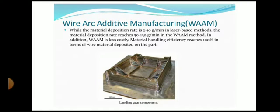While the material deposition rate is 2 to 10 gram per minute in laser-based methods — where you have the material in powder form and use a laser source for melting and depositing that material — with wire arc additive manufacturing, you can reach the deposition rate of 50 to 130 gram per minute. This is the biggest advantage of wire arc additive manufacturing. In addition, WAAM is less costly as you are using existing welding processes, and these welding equipments are very cheap compared to laser or electron beam sources.